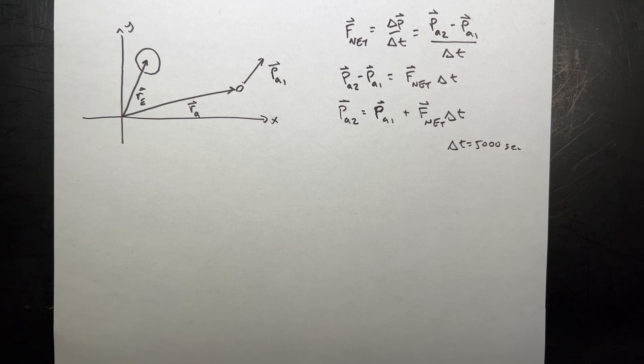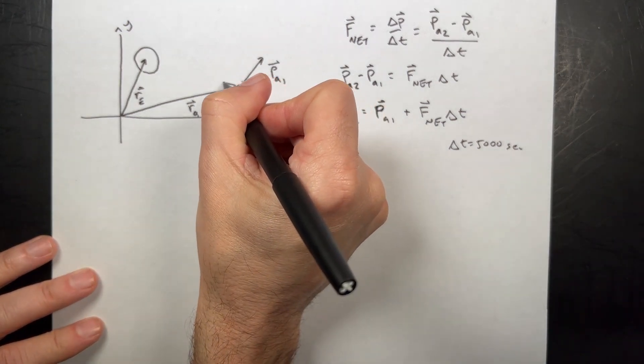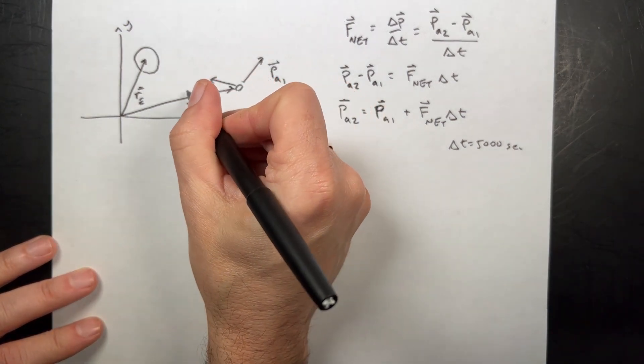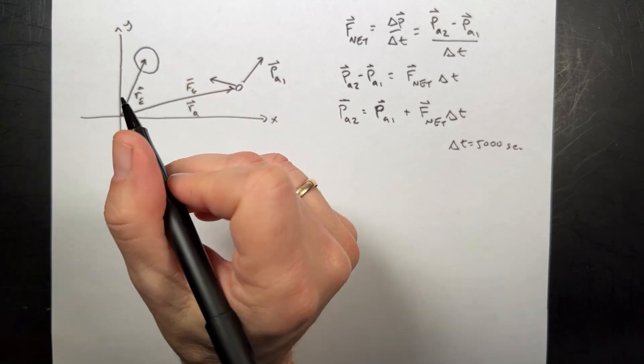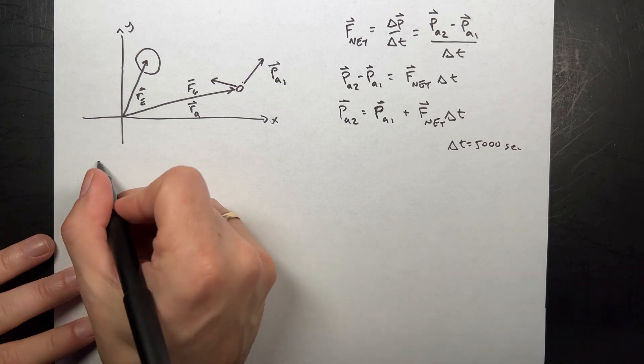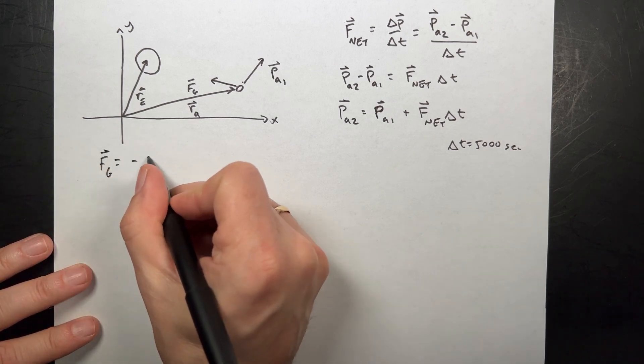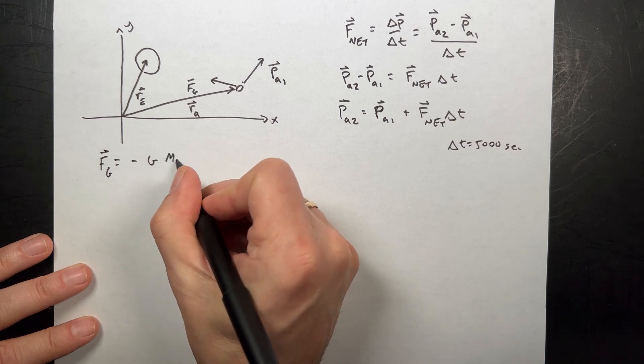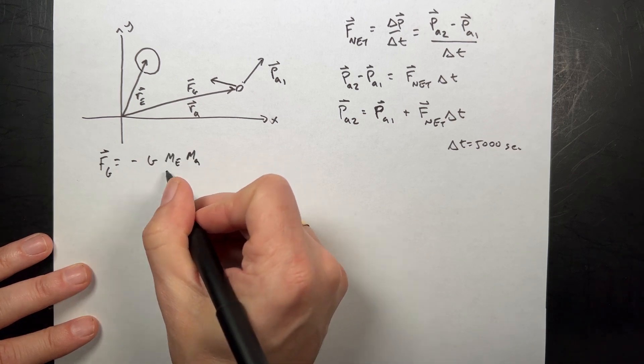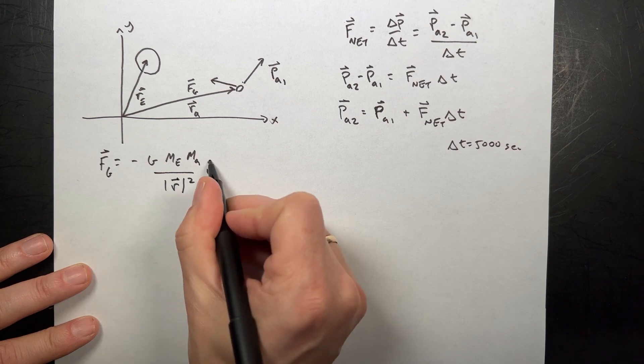But that means that we need to find the net force. So what force is acting on the asteroid? It's this gravitational force pulling that way. I'll call that Fg. So how do we find the gravitational force? In general, Fg is going to be equal to negative g, mass of the Earth, mass of the asteroid, over the magnitude of r squared r hat.